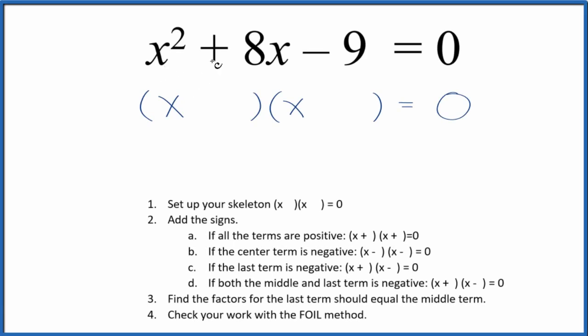If you're asked to factor the equation x squared plus 8x minus 9 equals 0, here's how you do it. First thing we want to do is set up a skeleton equation. That's this right here.